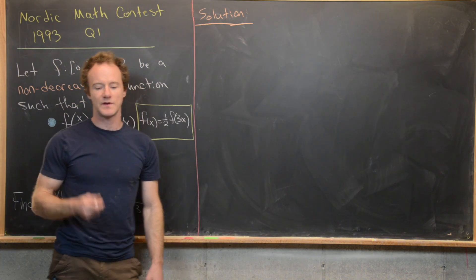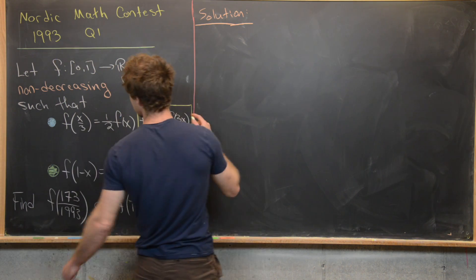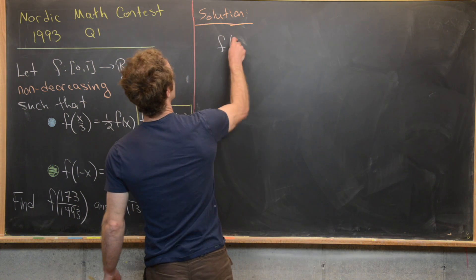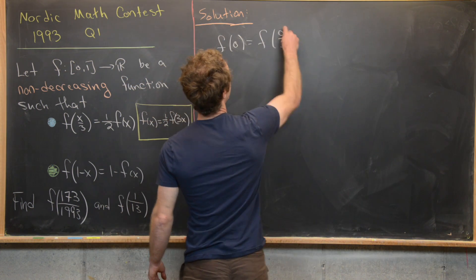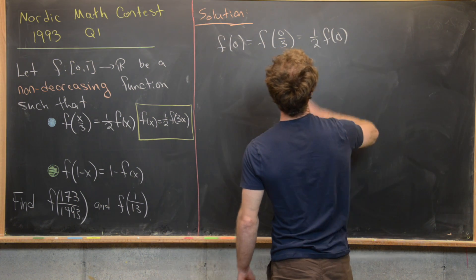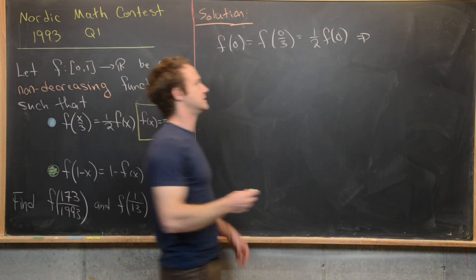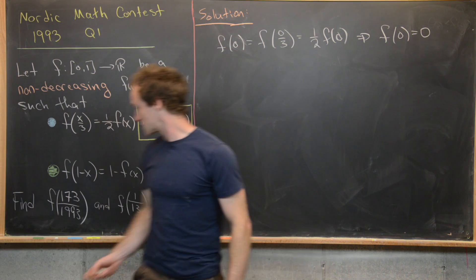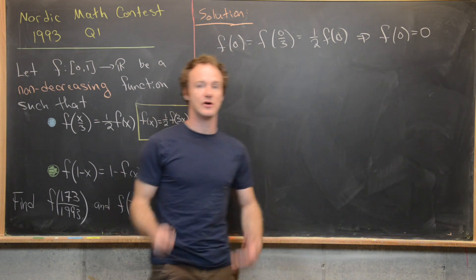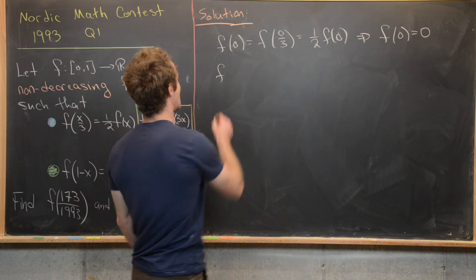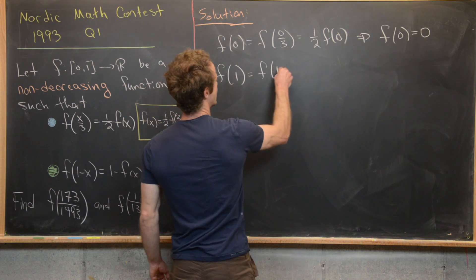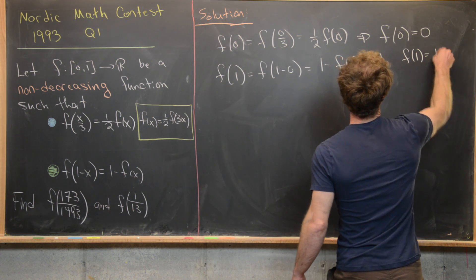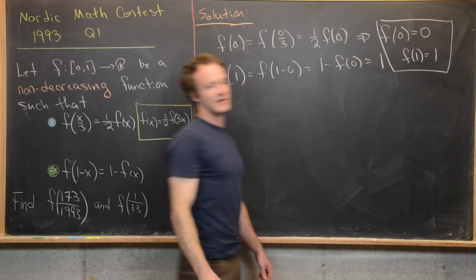Now for the solution. First, since 0/3 = 0, we know f(0) = f(0/3) = (1/2)f(0). The only number that is half of itself is zero, so f(0) = 0. Using that with the second condition: f(1) = f(1 − 0) = 1 − f(0) = 1. So we have f(0) = 0 and f(1) = 1.